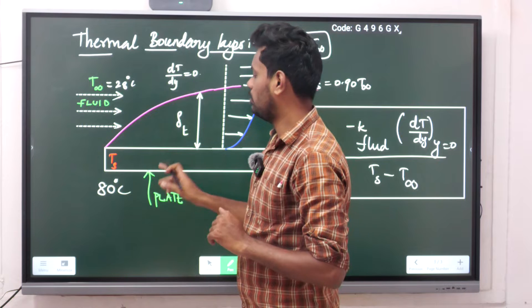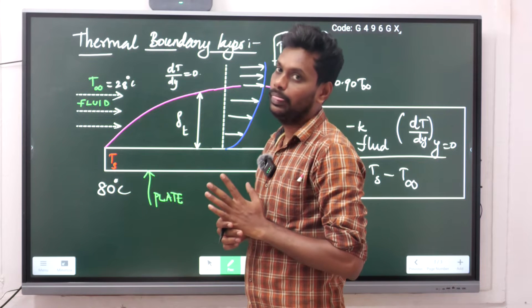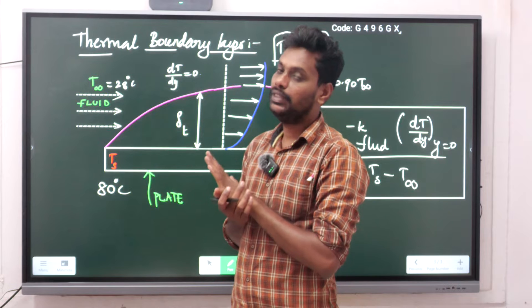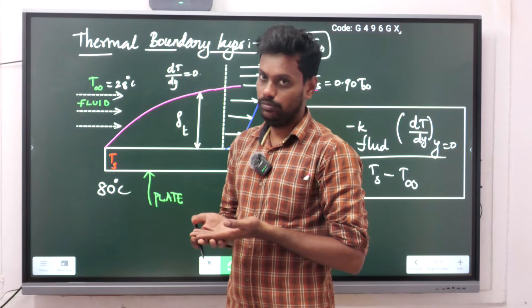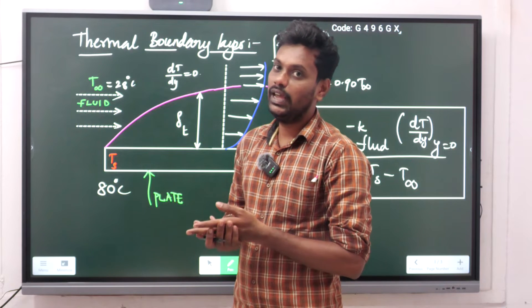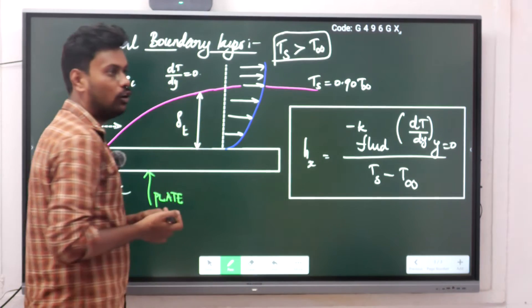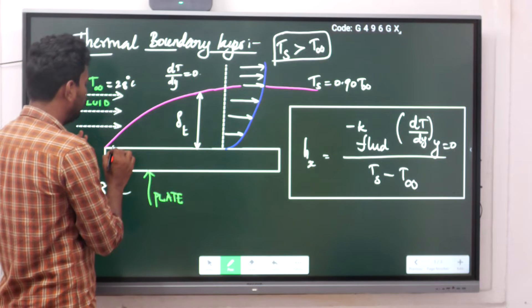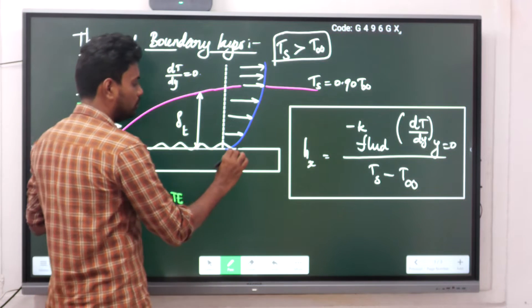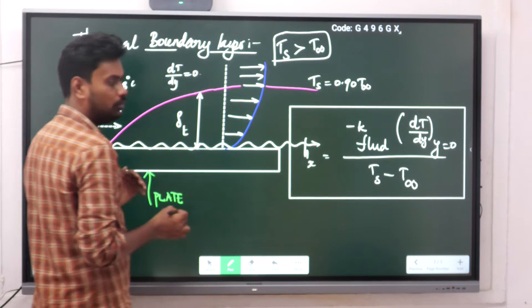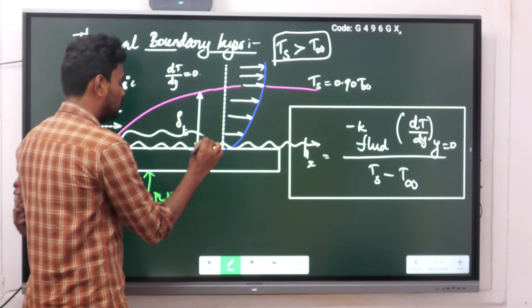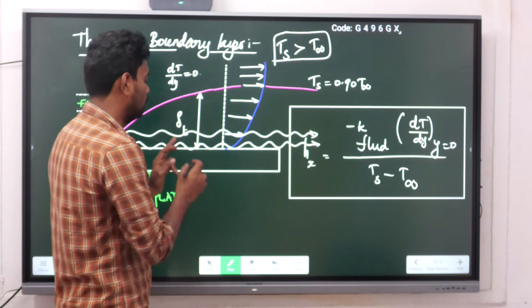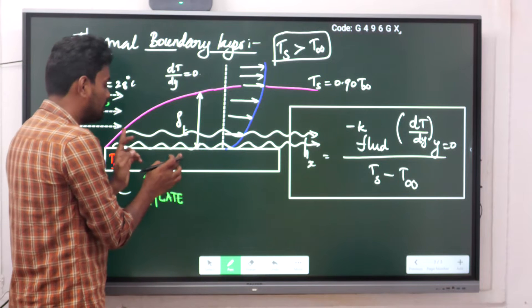So I have taken one flat plate at 80°C, and over it I am forcing the fluid to flow. The surface temperature of the plate is higher than that of the liquid — that is the condition I have assumed. Now, how is the thermal boundary layer created? The fluid flows over this plate in layers: the first layer flows on the surface of the plate, then another layer above it, and so on — layer by layer over the flat plate. The fluid layer adjacent to the plate is the important one.